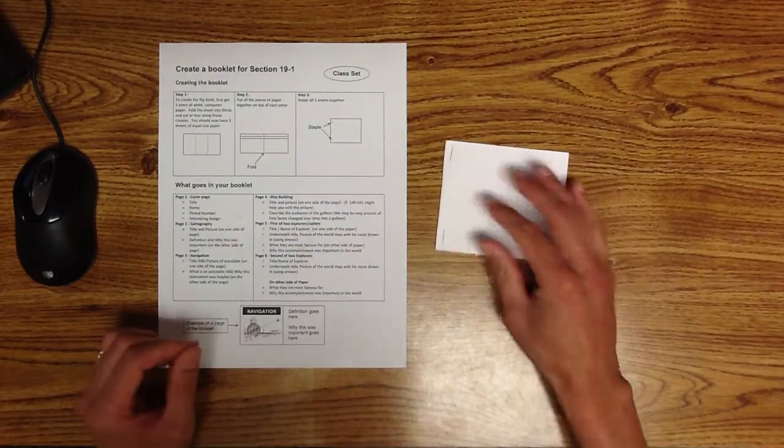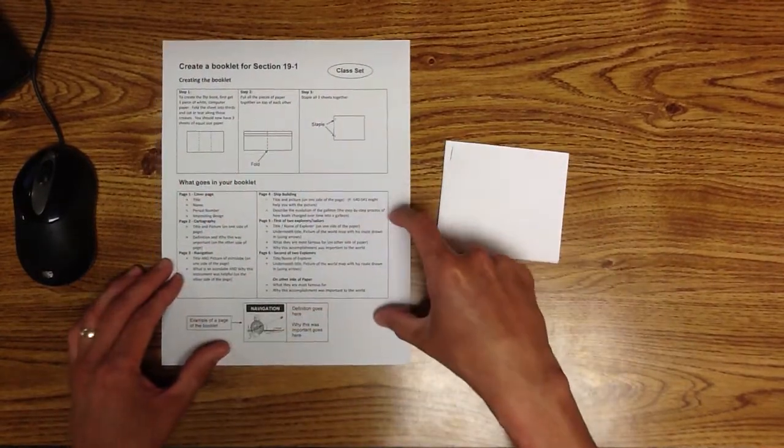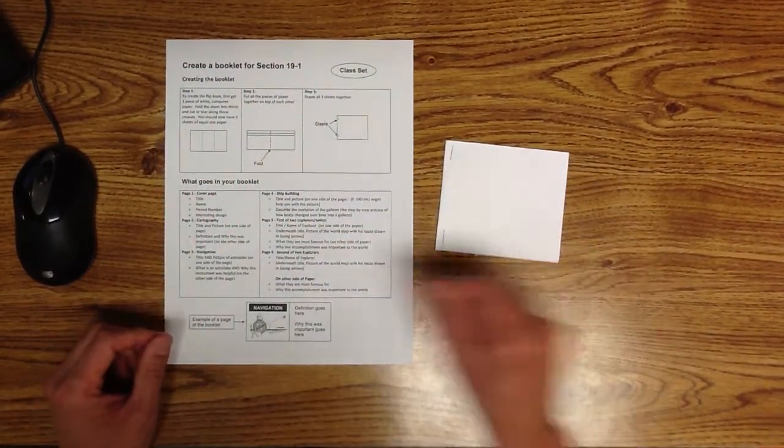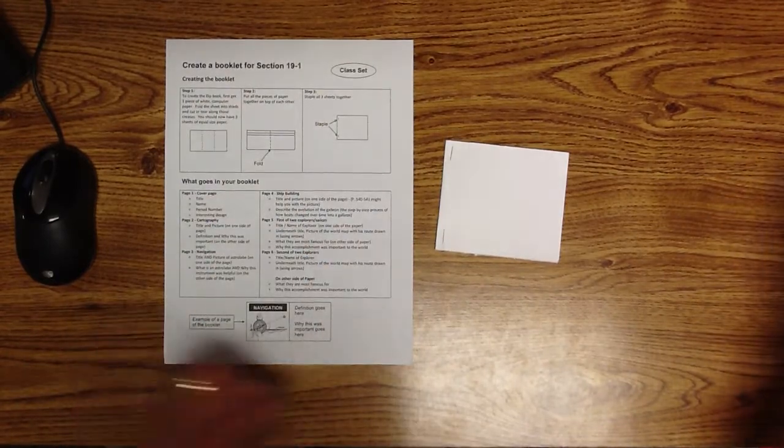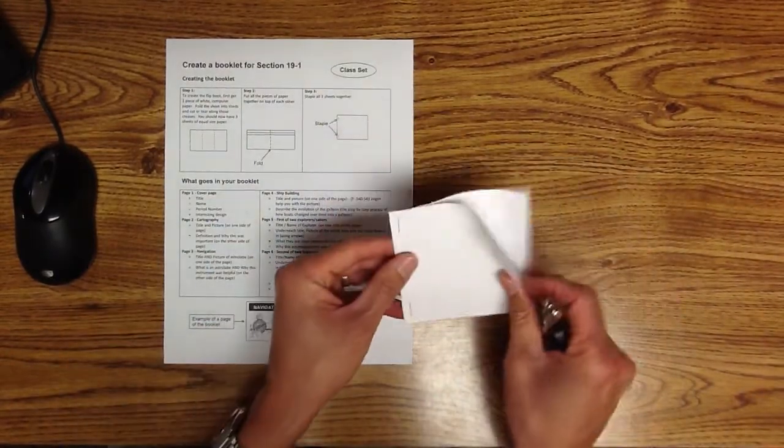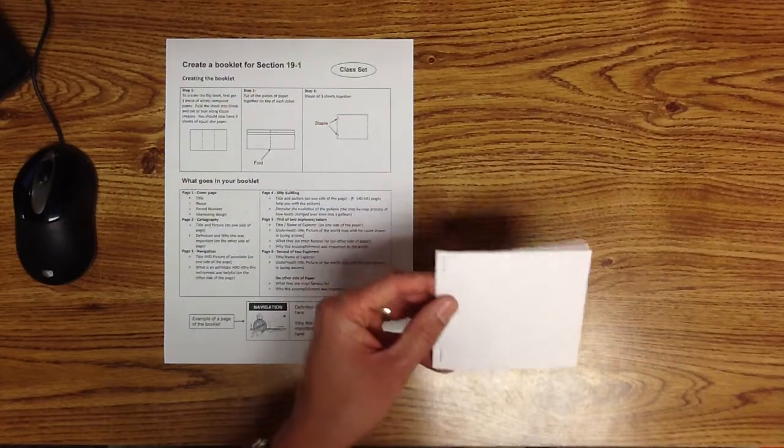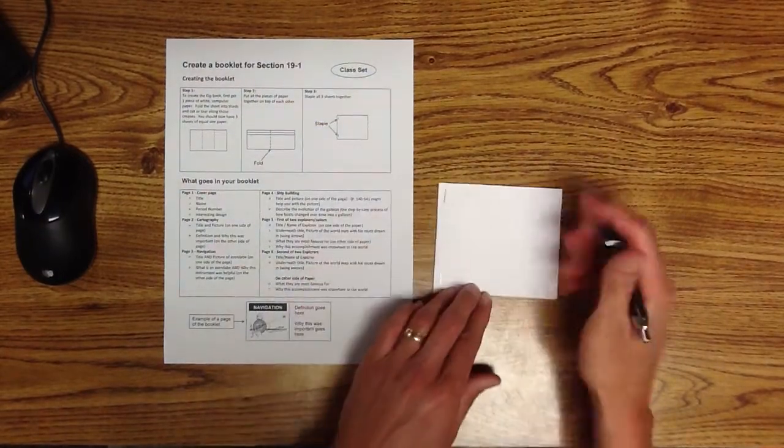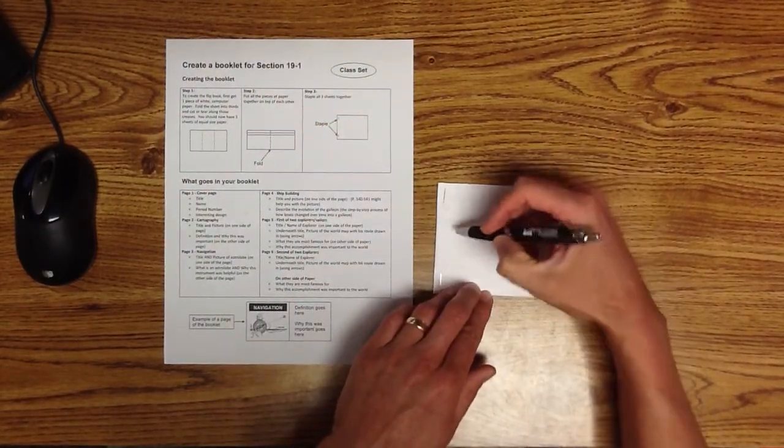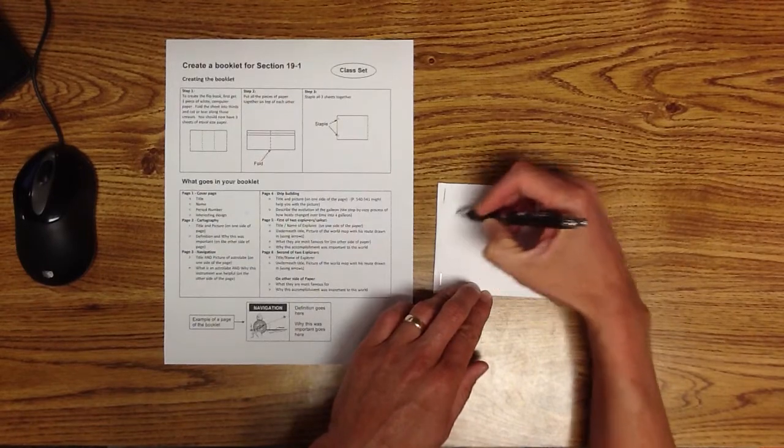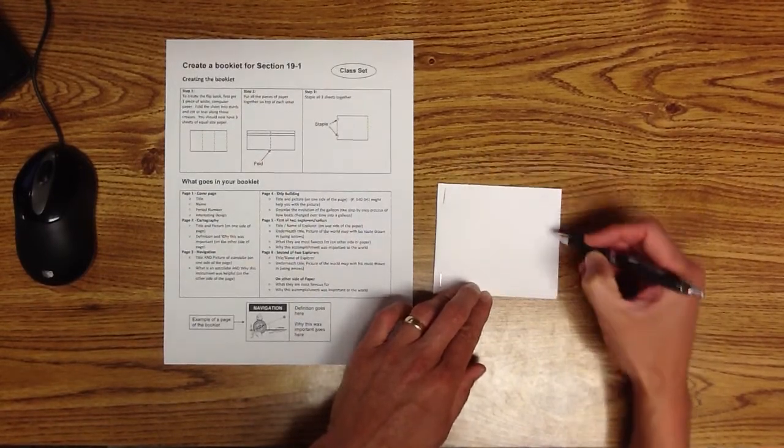Okay, then down here it tells you what goes in your booklet. Page one, cover page, that's this front cover right here. Okay, and what you need to have on here. Give me a title, Voyages of Discovery, Great Explorers of the World, whatever.